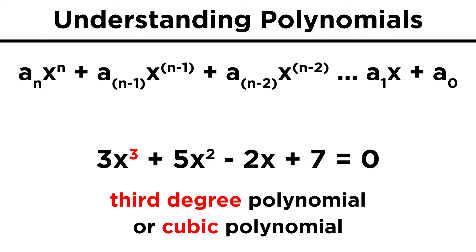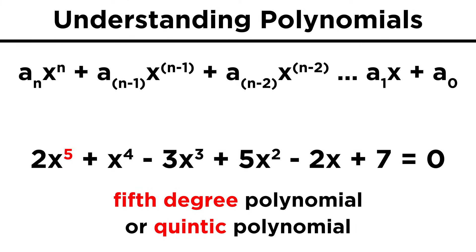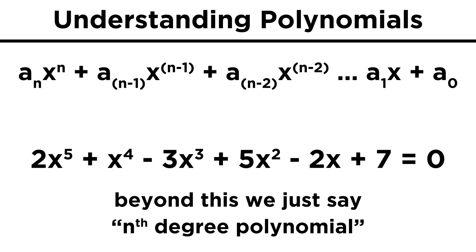Third degree is known as cubic, fourth degree is called quartic, fifth degree is called quintic, and beyond that we don't really have names, we would just say sixth degree, seventh degree, and so on.